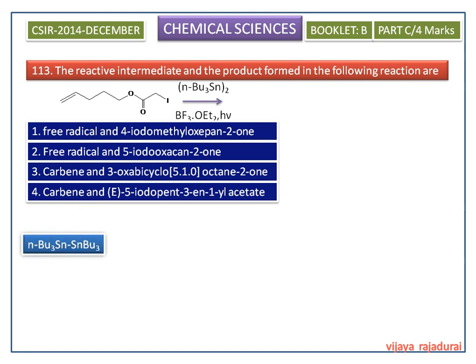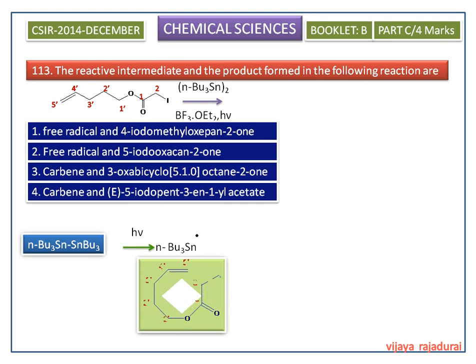Di-tertiary butyl tin molecule undergoes homolytic cleavage on irradiation, giving a tertiary butyl tin radical. This tertiary butyl tin radical then abstracts iodine from the starting material, leaving a new radical.